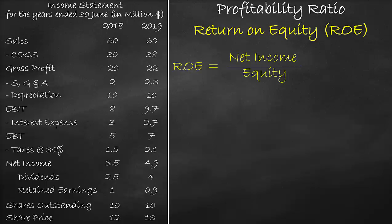We can get the net income from the income statement and equity from the balance sheet. Note that the income statement is a flow account, which means it is calculated over a year, while the balance sheet is a stock account, which is calculated at a certain day. Since we cannot compare a year to a day, we need to convert a day into a year by getting the average of the two balance sheet items.